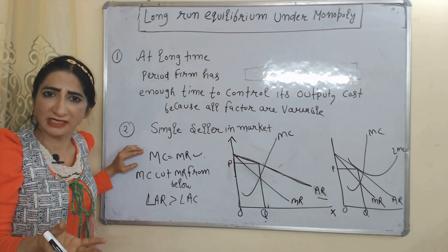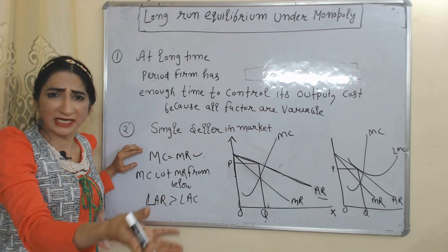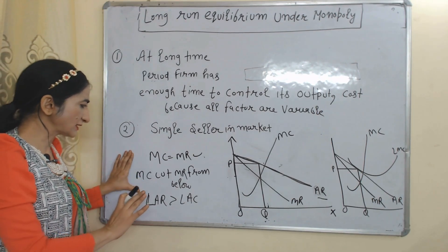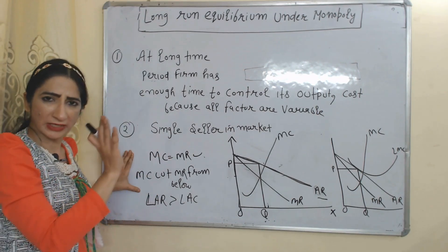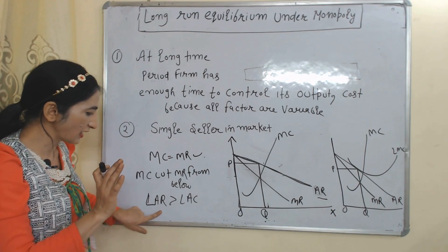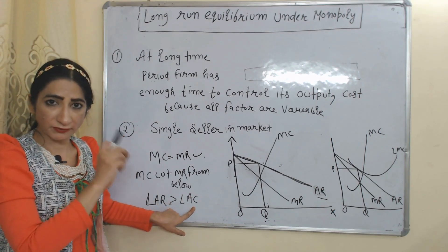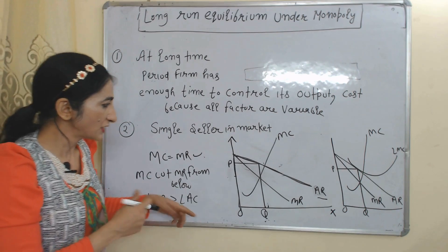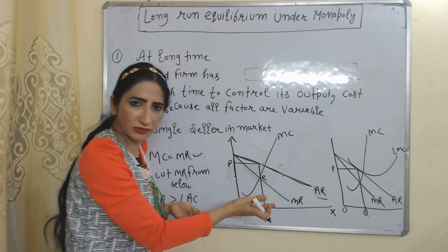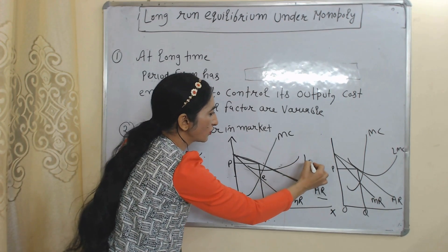Under monopoly in the long run, the firm mostly receives super normal profit, but in very few cases it can receive normal profit. The conditions of super normal profit are the same as discussed earlier. The only difference is that we use long-run average revenue and long-run average cost. At point E, both conditions are satisfied: MC equal to MR and MC cuts MR from below.